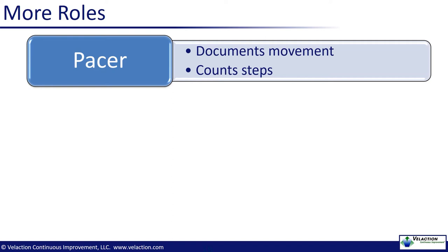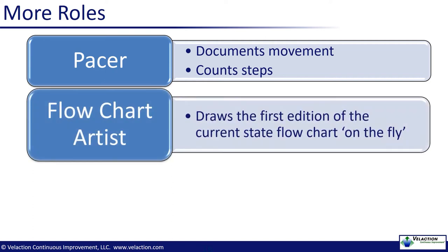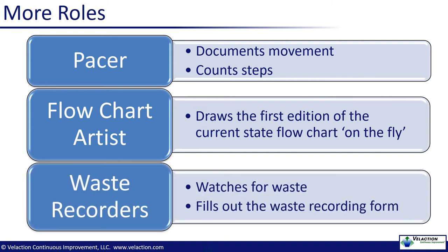The pacer can either count steps and convert to feet, or they can use a measuring wheel. The flowchart artist makes a visual representation of how the work flows in the area being improved. This should include the flow of the product, information, and how the people move. The first draft of the sketch will likely be fairly rough, but should contain the relevant information needed to clean it up later. Anybody who is not assigned a specific job is a waste recorder. They simply observe the process for any waste that they see. People in all roles should record waste, but the waste recorders do it without the distraction of another job. You should always have at least one dedicated waste recorder. We recommend using our waste recording form for capturing this information.